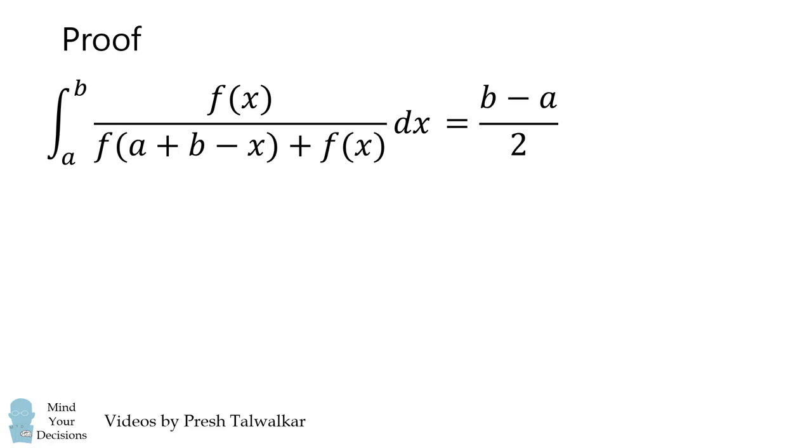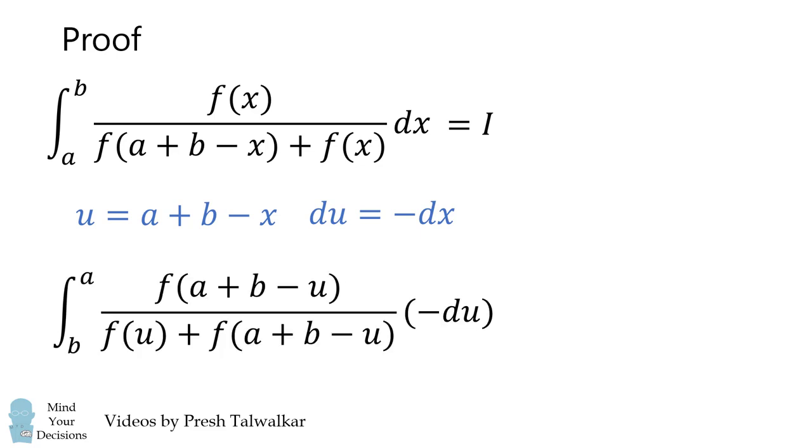So now we want to do a quick proof of why this formula is true. Let's suppose that this integral is equal to i. We'll do a substitution that u is equal to a plus b minus x. du will equal negative dx, so the integral becomes the following. Again this will be equal to i because we've done a change of variables.